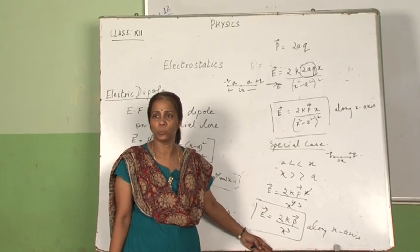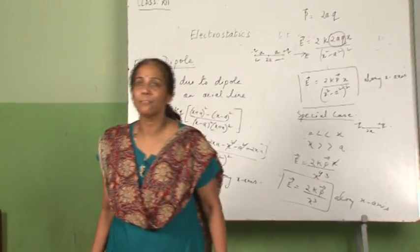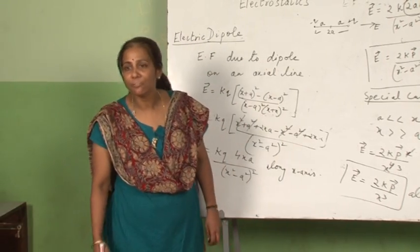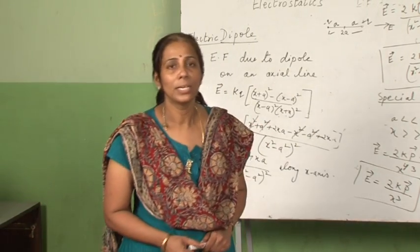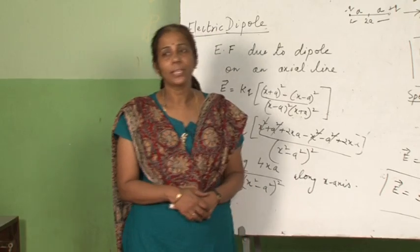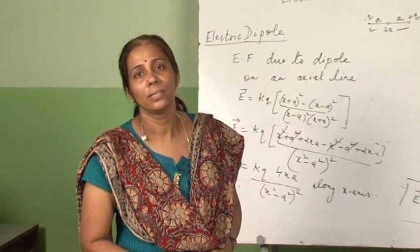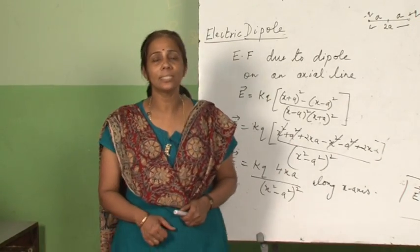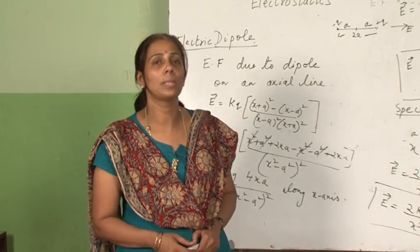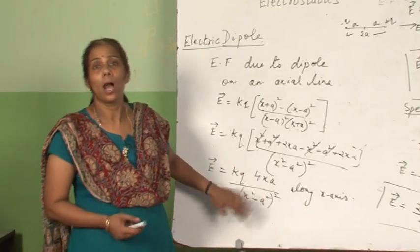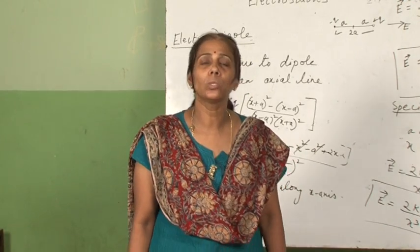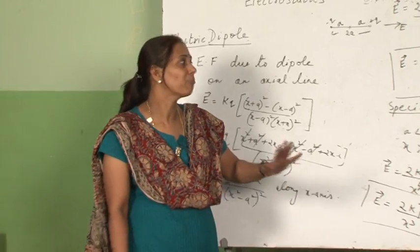Let us summarize what we have done today. Electric field is the space around a source charge where a test charge can experience a repulsive force. We took the source charge and test charge both as positive, so it is a repulsive force. The magnitude of the electric field is defined as E is equal to force per unit charge, that is F by q.